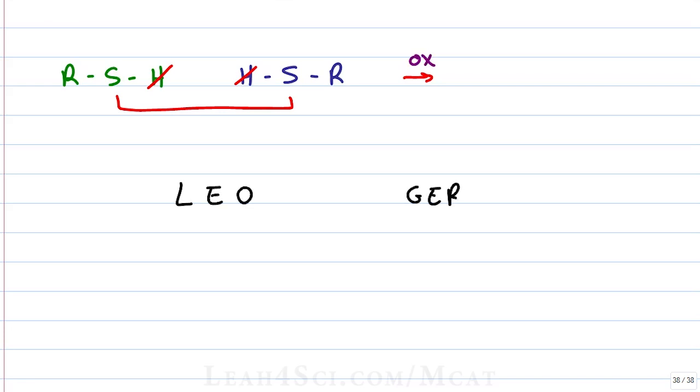Leo the lion says GRR, where Leo stands for loss of electrons is oxidation, and gain of electrons is reduction. But where do we see electrons in this reaction? We don't, but we have to remember that hydrogen is made up of one proton plus one electron. So when we're thinking loss of electrons oxidation, think loss of hydrogen is oxidation. And when we remove two hydrogen atoms from two thiols to get a molecule that's missing those hydrogens, we're also missing electrons, giving us an oxidation product.